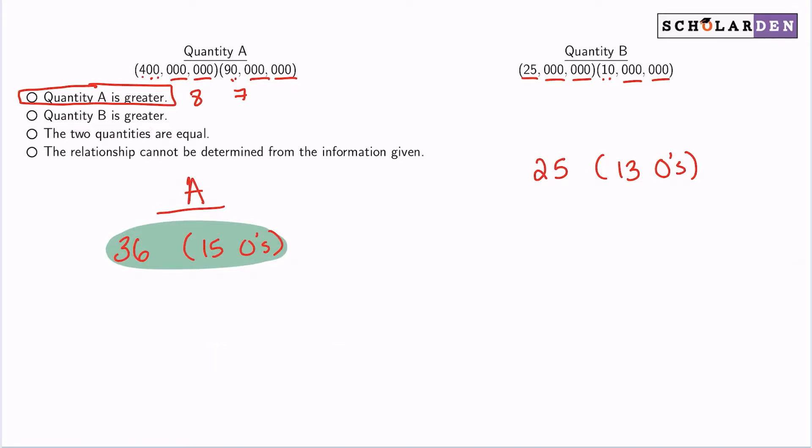Back to that simple example: if we had a 4 with three zeros, that'll be bigger than a 2 with one zero, because this would be 4,000 and this will be 20. The more zeros you have, the bigger the number is, especially given that they're both in the tens anyway.